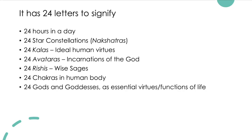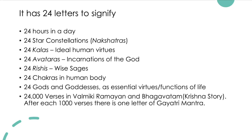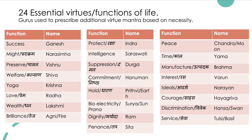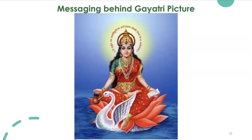The 24 letters also signify 24 gods and goddesses as essential virtues and functions of life. There are 24,000 verses in Valmiki Ramayana and Bhagavatam — the Krishna story — and after each thousand verses there is one letter of the Gayatri mantra. Here are the 24 essential virtues or functions of life, with each function having a name associated to it. Gurus used to prescribe additional deity or name mantras based on necessity, in addition to the Gayatri mantra. The messaging behind the Gayatri mantra: water means calm, peace, purity, and clarity.